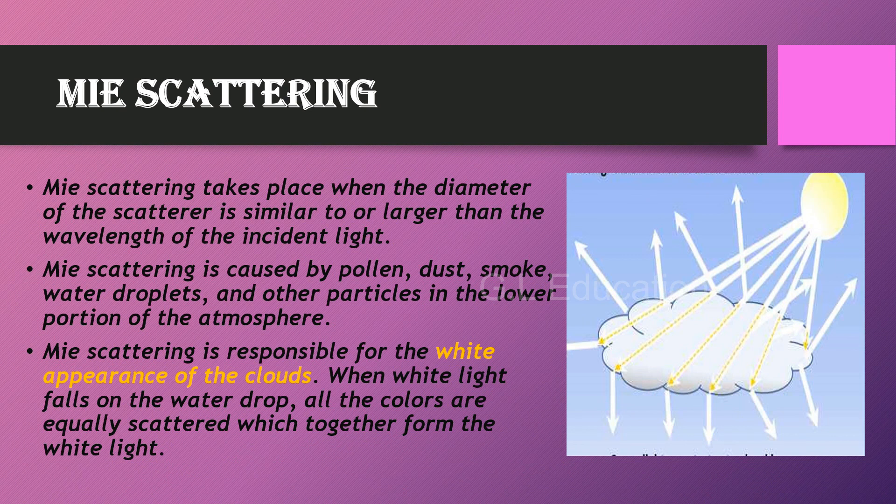Mie Scattering takes place when the diameter of the scatterer is similar to or larger than the wavelength of the incident light. Mie Scattering is caused by pollen, dust, smoke, water droplets, and other particles in the lower portion of the atmosphere. Mie scattering is responsible for the white appearance of the clouds.